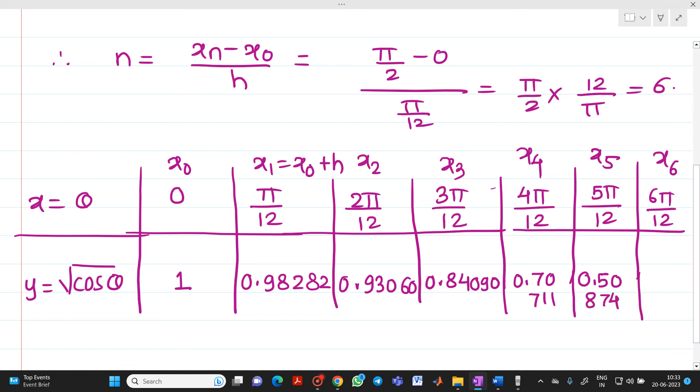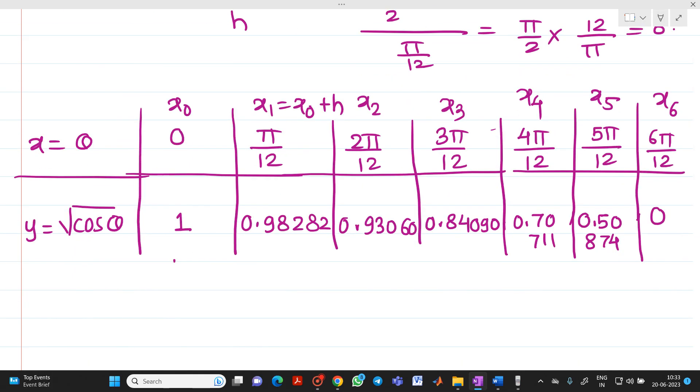And when you put 6π/12 which is equal to π/2, you will get answer as 0. So if you see this will be your value of y₀, y₁, y₂, y₃, y₄, y₅, and y₆.